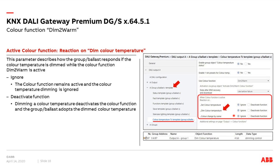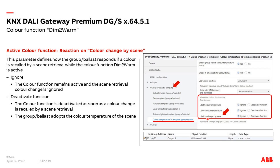Similarly, configure what happens when the device receives a relative dimming command for the color temperature — a four-bit object from a rocker dimmer — either ignore it or deactivate the function and adopt the new dimming command. And a third parameter: when someone calls a scene, should the gateway ignore the scene, or deactivate the DIMM-TO-WARM function and adopt the color temperature value of the scene? These settings apply per group or per ballast.